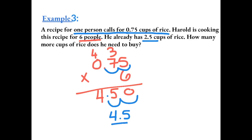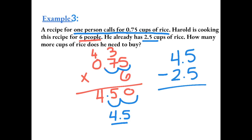He already has 2.5 cups of rice, but he needs 4.5 total. So to find how many more he needs, we take 4.5 minus 2.5. 5 minus 5 gives us 0, 4 minus 2 gives us 2. Remember, when you're adding or subtracting decimals, you do have to line up the decimal. So he needs 2 more cups of rice.